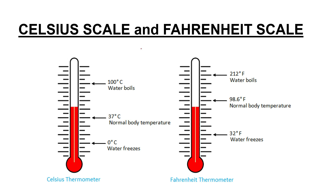We can measure temperature on different scales. On the Celsius scale, the melting point of ice is 0°C and boiling water is 100°C. On the Fahrenheit scale, the ice point is 32°F and the boiling point is 212°F. Using thermal expansion of mercury, body temperature is 37°C or 98.6°F.